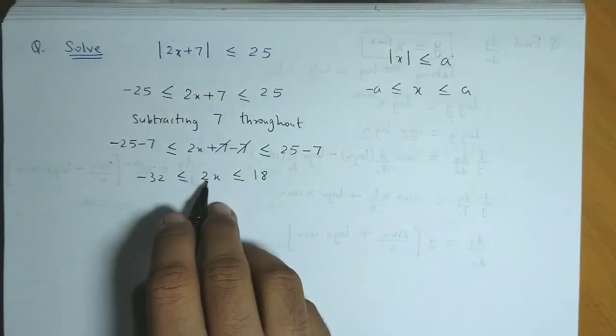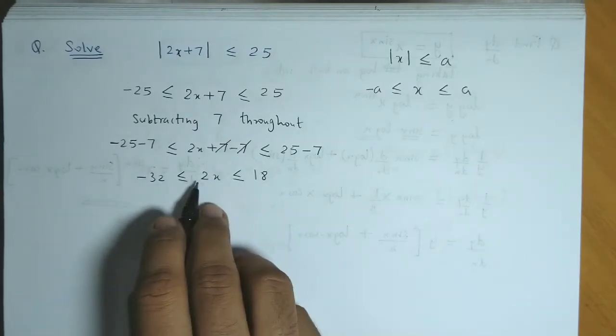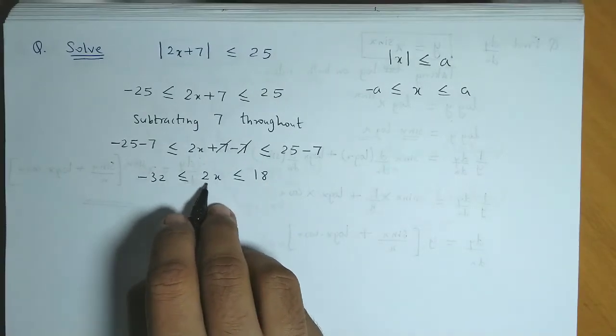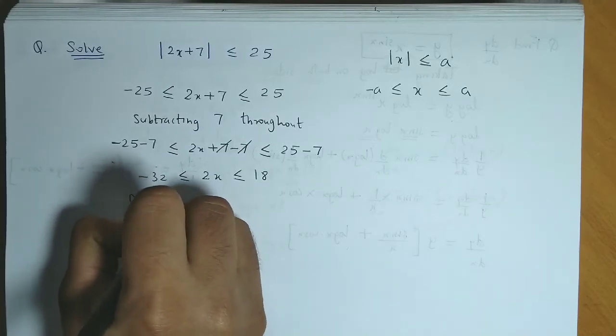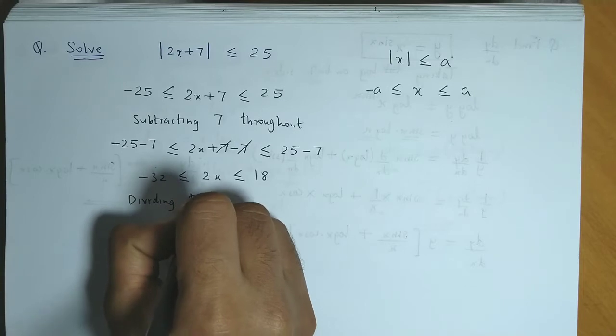Now here we need the value for x. So we need to divide throughout by 2 since we have 2x over here. So the next step would be dividing throughout by 2.